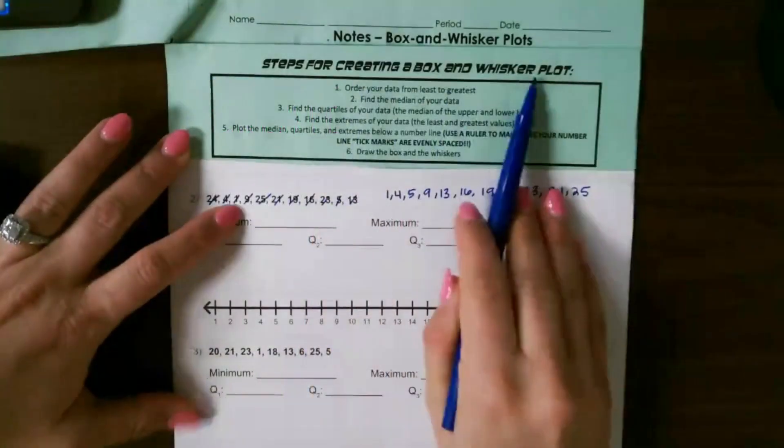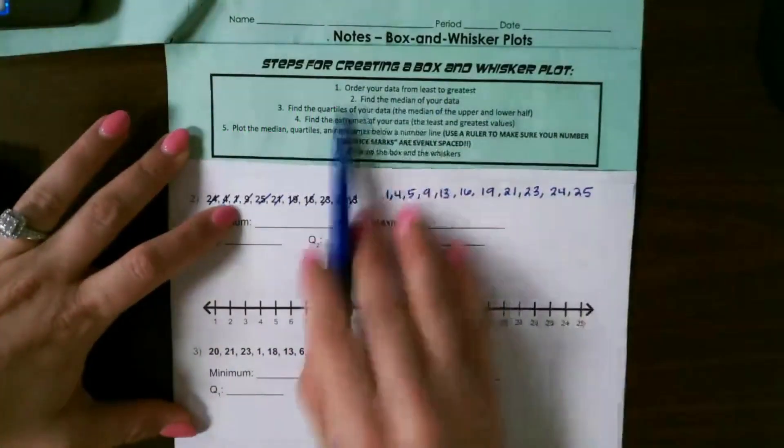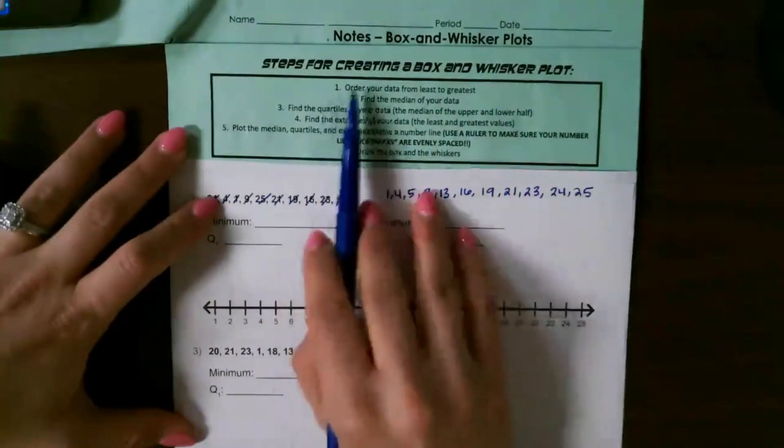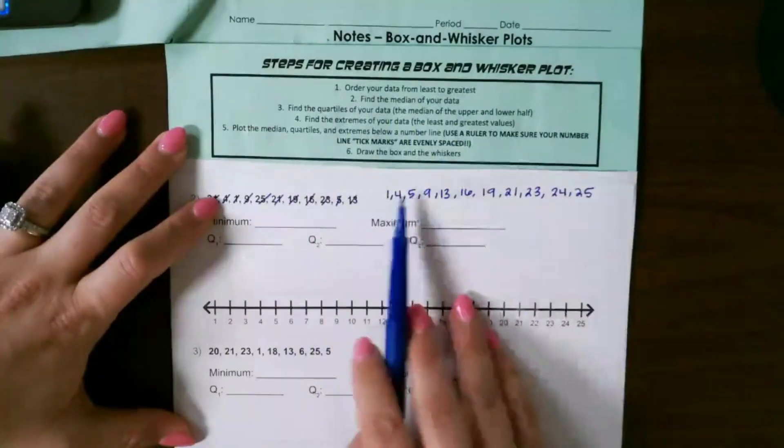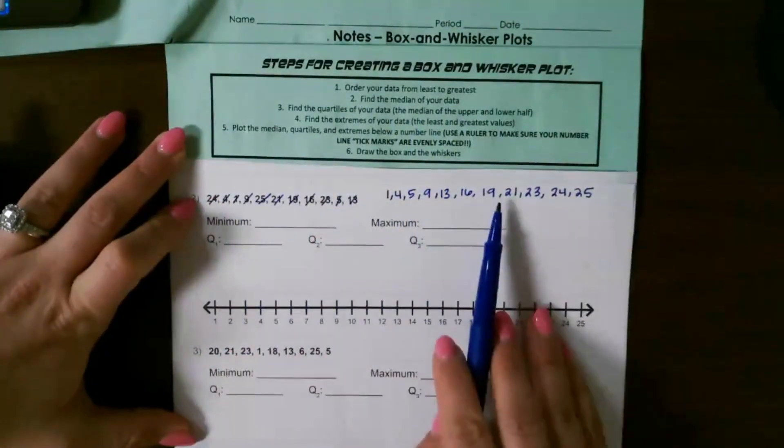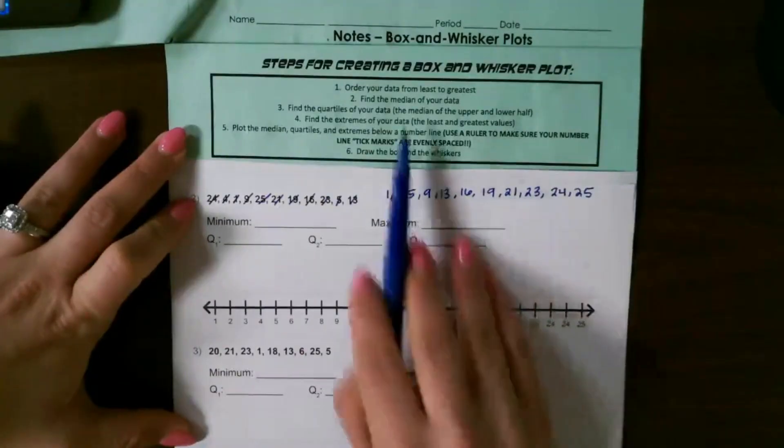Let's look at creating a box and whisker plot. Here are steps up top and I'm going to follow them for this example. First you have to order your data from least to greatest, which is what I've already done here. I took this data and ordered it from least to greatest. Step two is to find the median.